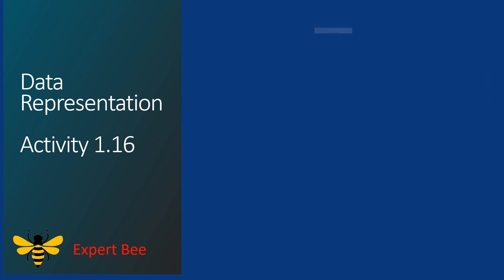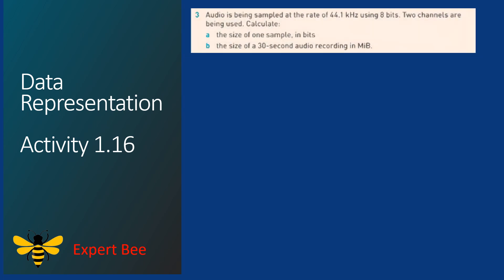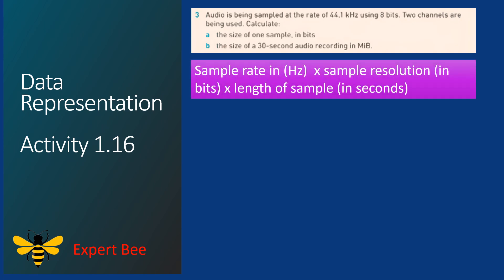Now we will solve Question 3. Audio is being sampled at a rate of 44.1 kilohertz using 8 bits, and two channels are being used. Calculate: (a) the size of one sample in bits, and (b) the size of a 30-second audio recording in megabytes. We will use the formula: sample rate in Hertz × sample resolution in bits × length of sample in seconds.